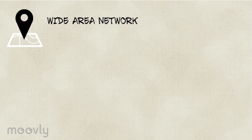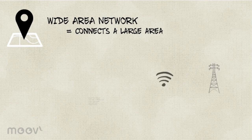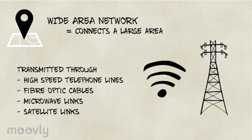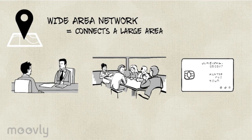Next, wide area networks. They operate over a large area such as cities. Data is transmitted through high-speed telephone lines, fiber optic cables, microwave links, and satellite links. They are usually used by companies, universities, and banks with branches in different countries.